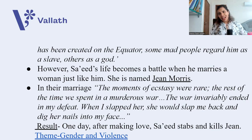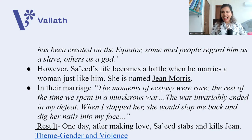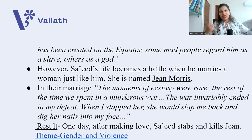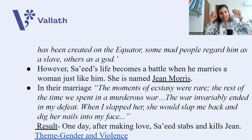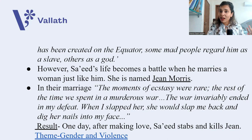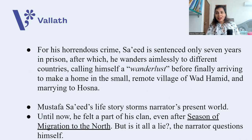Something then turns Said's life upside down. He meets another woman, Jean Morris — a white woman — and marries her. But Jean Morris is just like Said. As the novel describes their marriage: 'The moments of ecstasy were rare. The rest of the time we spent in murderous war. The war invariably ended in my defeat. When I slapped her, she would slap me back and dig her nails into my face.' The result of this violent marriage is that one day, after making love, Said stabs and kills Jean Morris. The theme here is gender and violence.